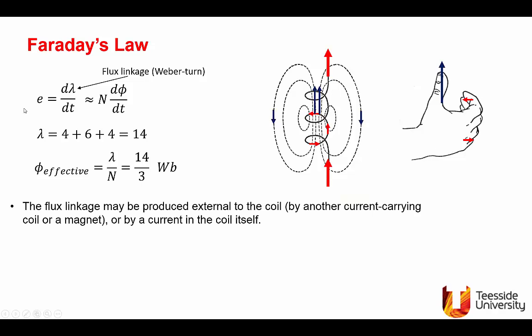If d lambda by dt generates E, then it's not essential that the flux is produced by the coil itself. This coil shown here, there will be an EMF if the flux changes. However, if I bring another coil and put it in the proximity of the first coil, the red coil will be cut by the flux lines, so the flux could be external to the coil.